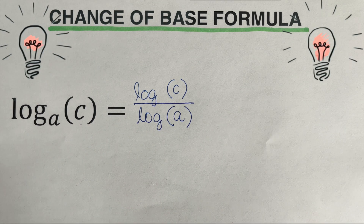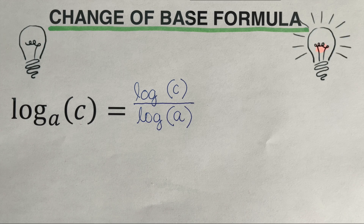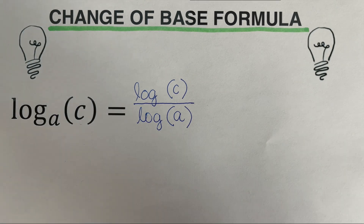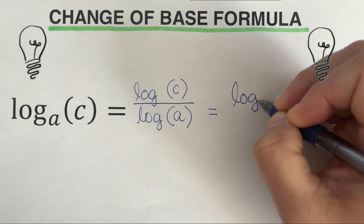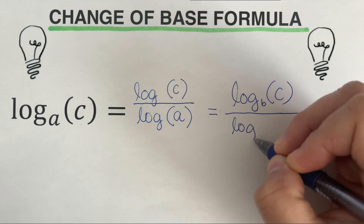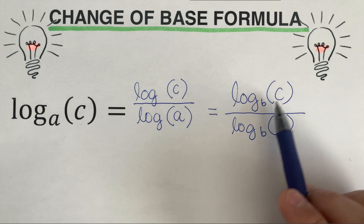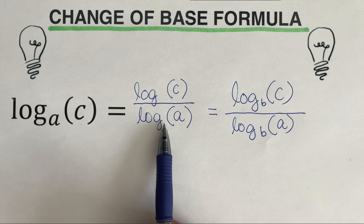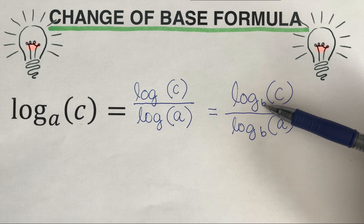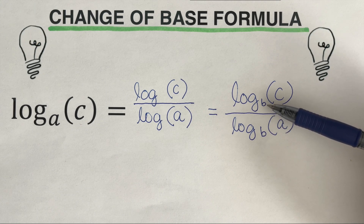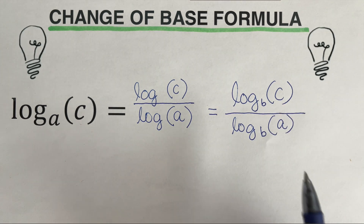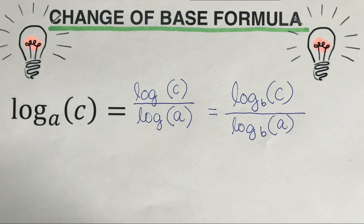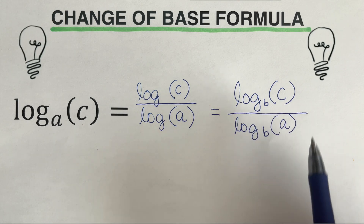This expression is very important because most calculators are set up to the base of 10. However, we can come up with a more general expression using the change of base formula, and that would be log of c to the base b over log of a to the base b. This means the base doesn't have to be 10 every time — it can be any number, represented by variable b. This is only true when both bases on the numerator and the denominator are the same. This is the general rule for the change of base formula.